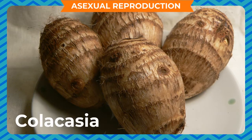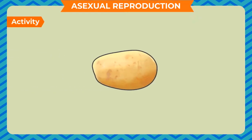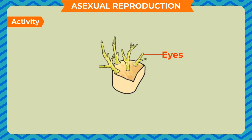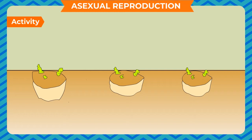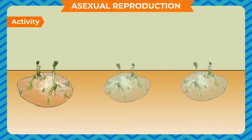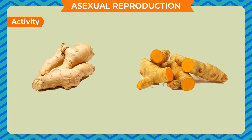To observe vegetative propagation in potato: Take a potato and locate depressions (eyes) on its surface. Each eye has a bud which can grow into a new plant. Cut a few pieces of the potato, each with an eye, and bury them in moist soil. Keep the soil moist by adding water regularly. After a few days, each bud grows into a new plant. Likewise, you can also grow ginger and turmeric.